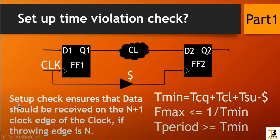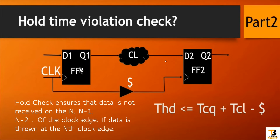Then what is the need of the hold check? There is one big limitation with the setup check: it does not check if the data is received on the same clock edge. For example, if we are throwing data on the Nth clock edge and it is getting received at the Nth clock edge only — this happens when there is a skew on the clock path. So the setup check does not check whether data can be received on the Nth clock cycle, and that limitation is covered with the hold time check. Hold check ensures that data is not received on N, N-1, N-2 and so on of the clock edge if the data is thrown at the Nth clock edge.